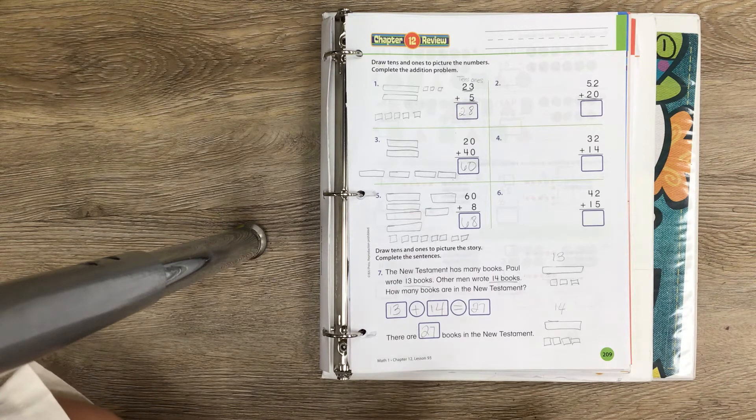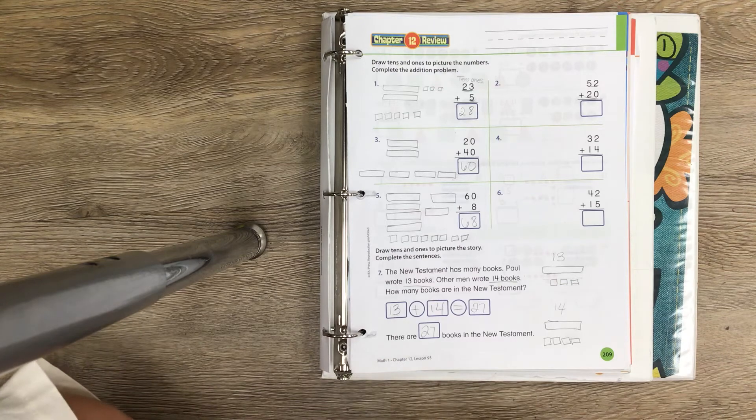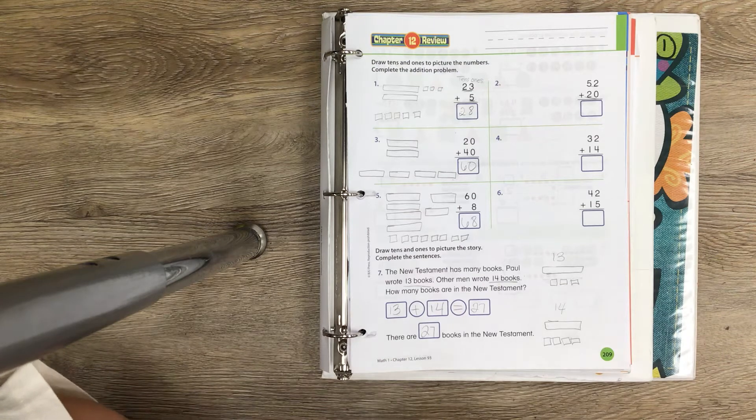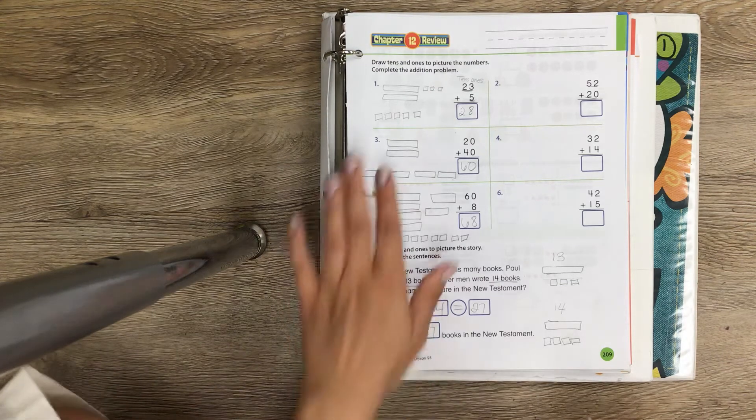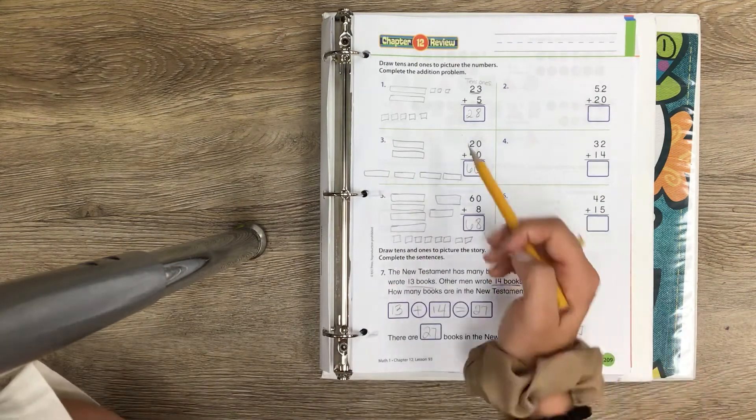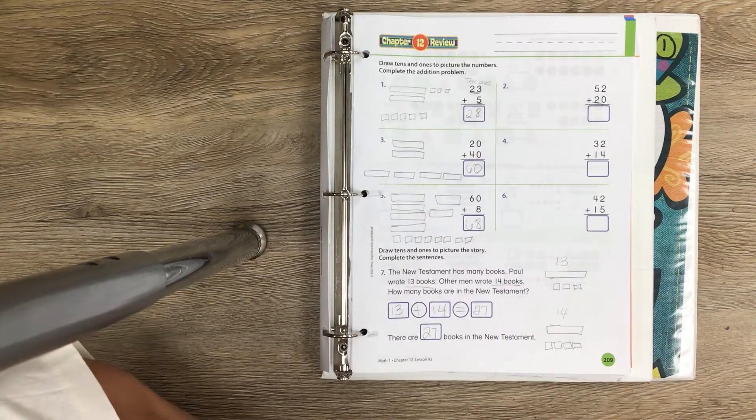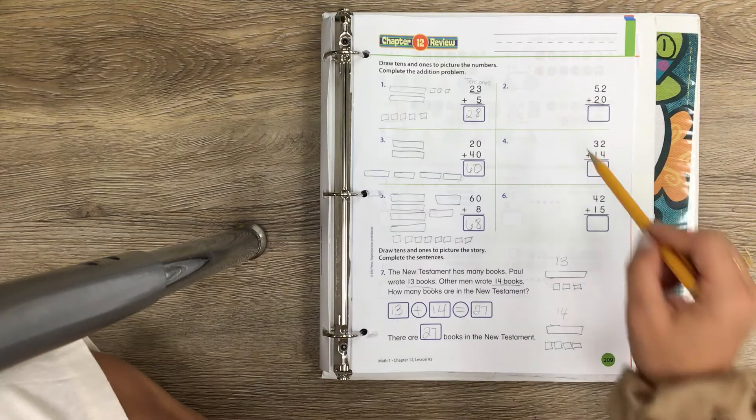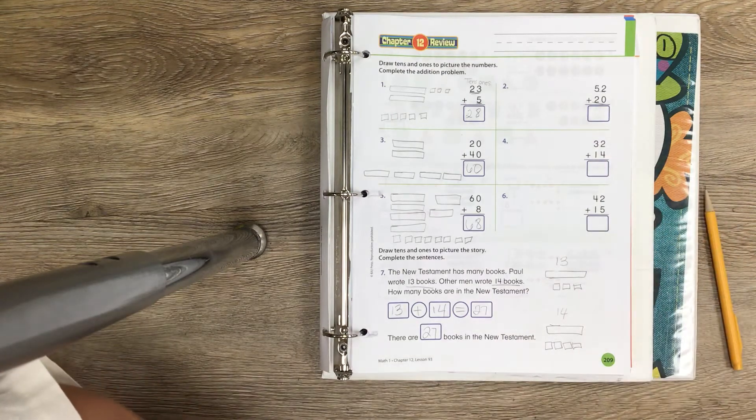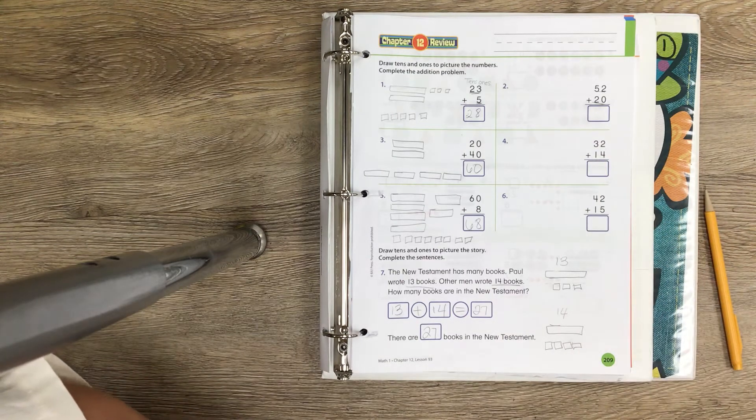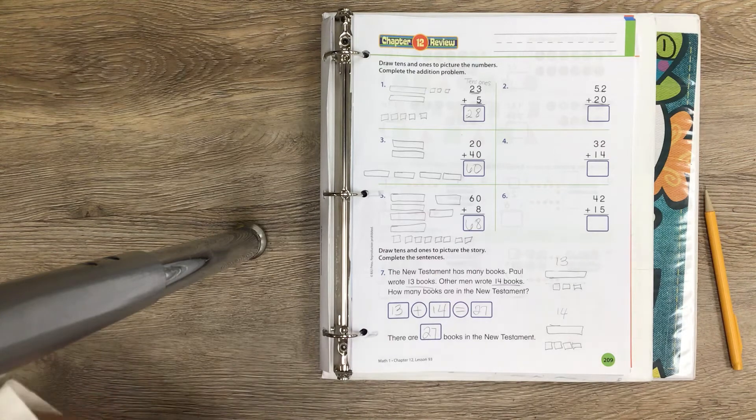I did 1, 3, 5, and 7 for us. You guys are going to do 2, 4, and 6 on your own on page 209. This is a review, so this should be pretty easy for you guys.